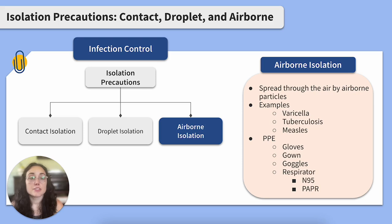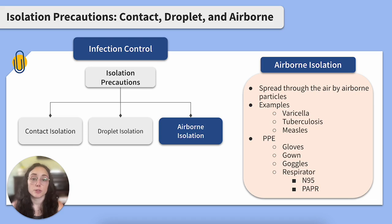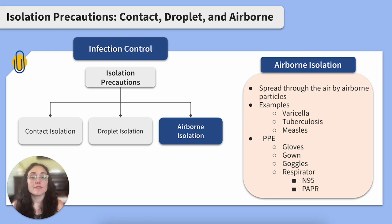Airborne isolation is used for clients with an infectious disease spread through airborne particles. Airborne particles are similar to respiratory droplets but much smaller, and they can travel through the air much longer, which is why they pose such a high risk of transmission. Diseases requiring airborne isolation include varicella, tuberculosis, and measles. Clients with COVID-19 are generally on droplet precautions unless receiving an aerosol generating procedure, in which case they are on airborne precautions. These clients require negative pressure rooms, which draw airflow into the room to prevent spread of airborne particles outside. Before entering an airborne isolation room, don gloves, gown, goggles, and a respirator such as an N95 or a powered air purifying respirator. Respirators are tight-fitting face coverings that can filter airborne particles.